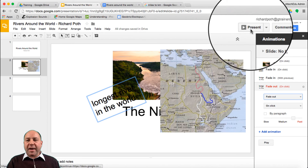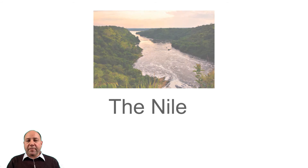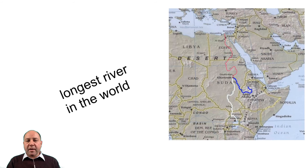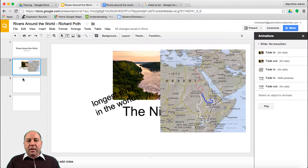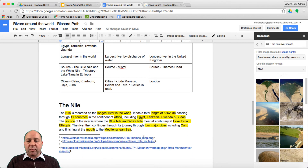Let's play the presentation. There's our fade in, fade out of the Nile title. Fade in of the keyword and then the text disappears. You can see how we're starting to build this presentation. So you need to continue on and complete all the keywords within your paragraph.